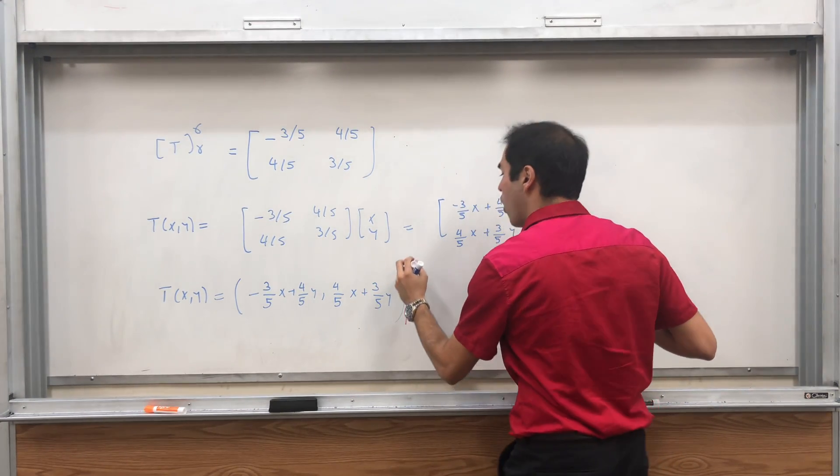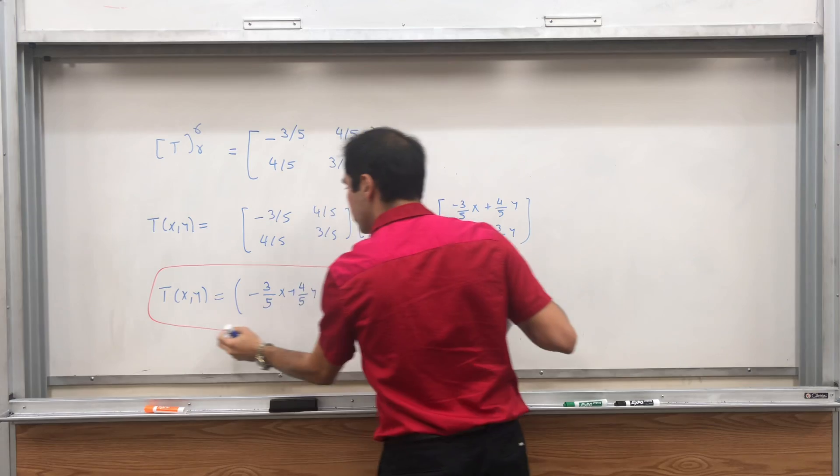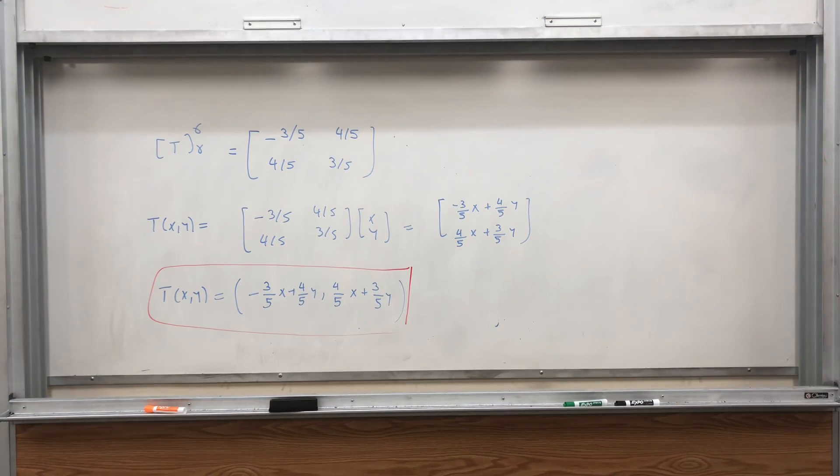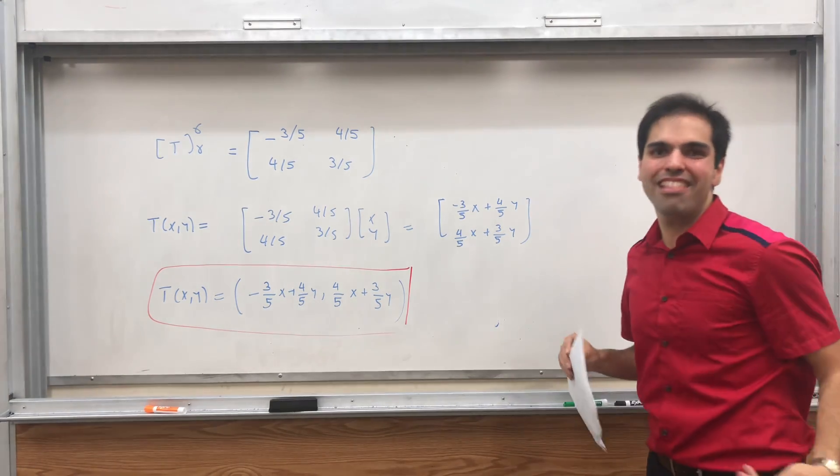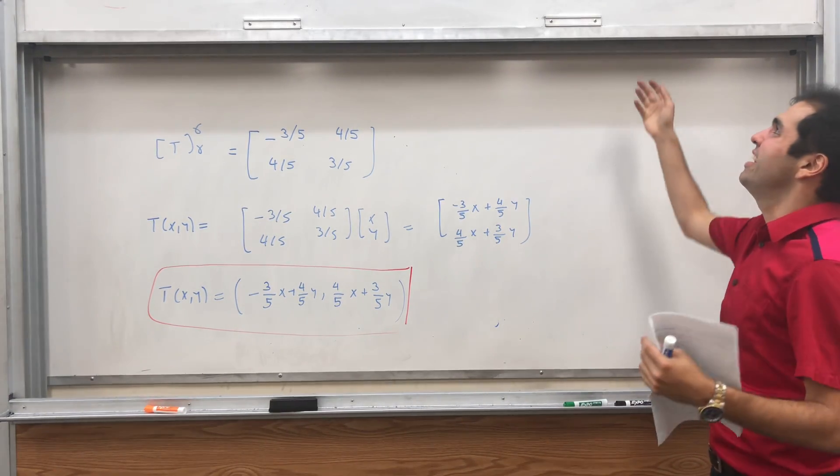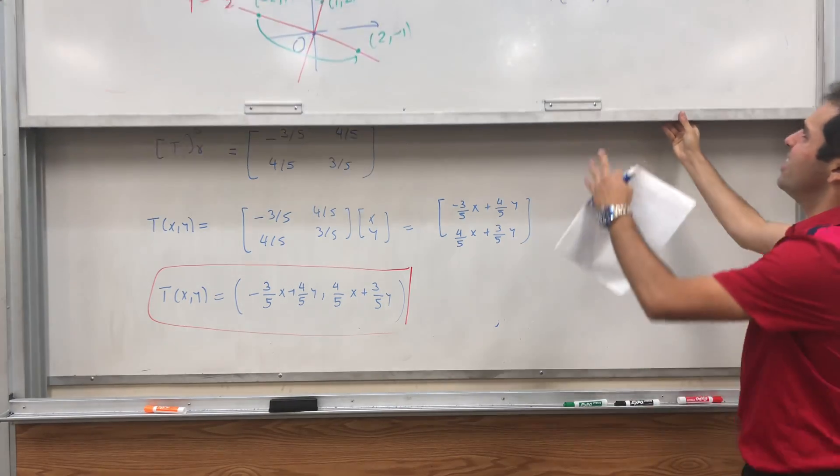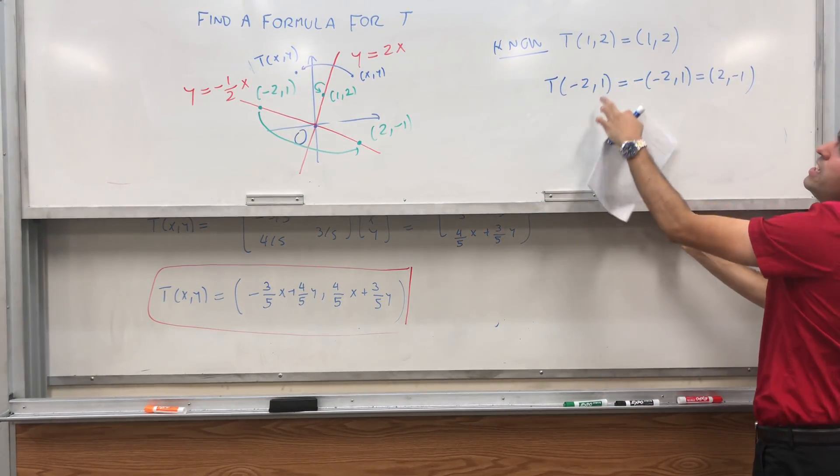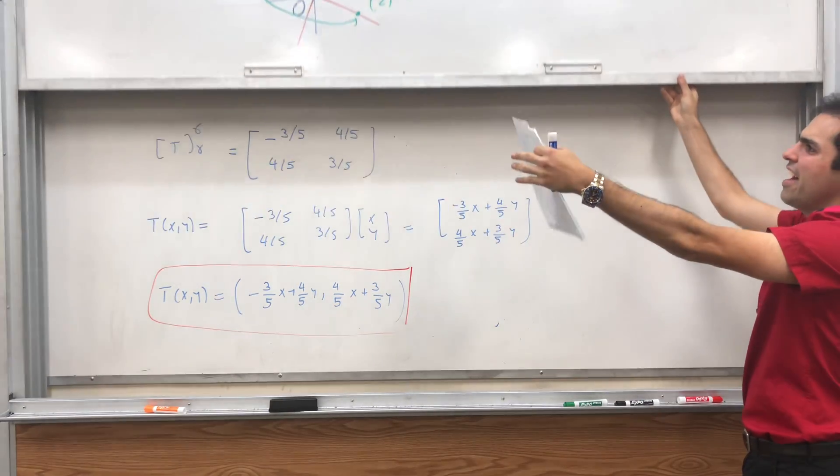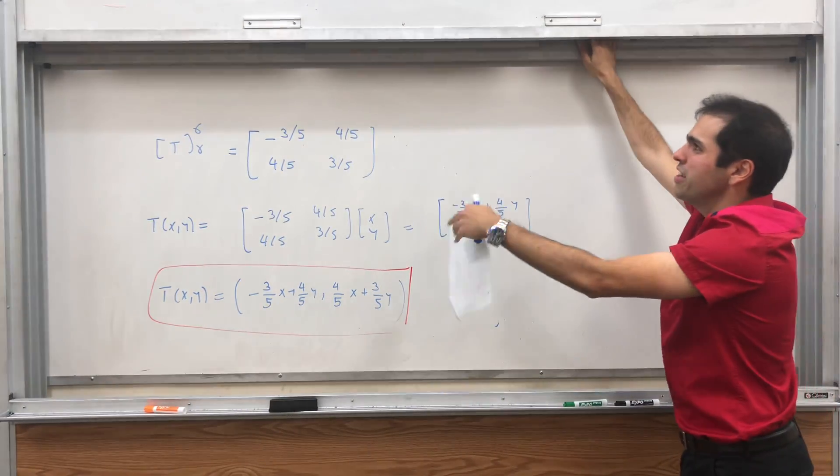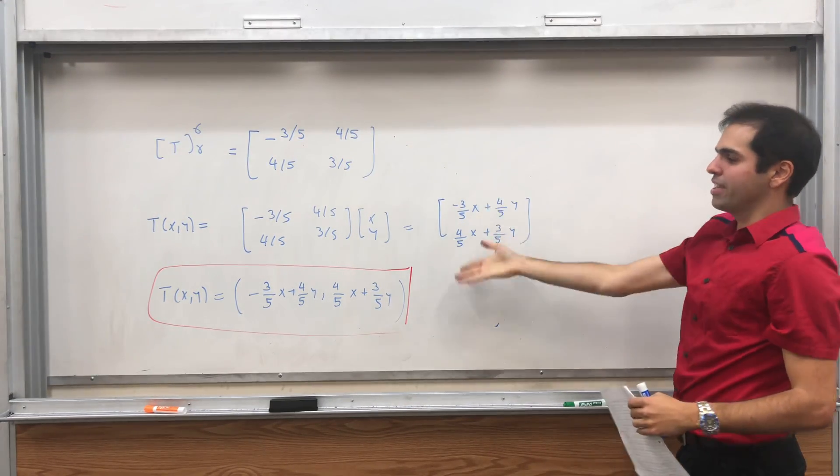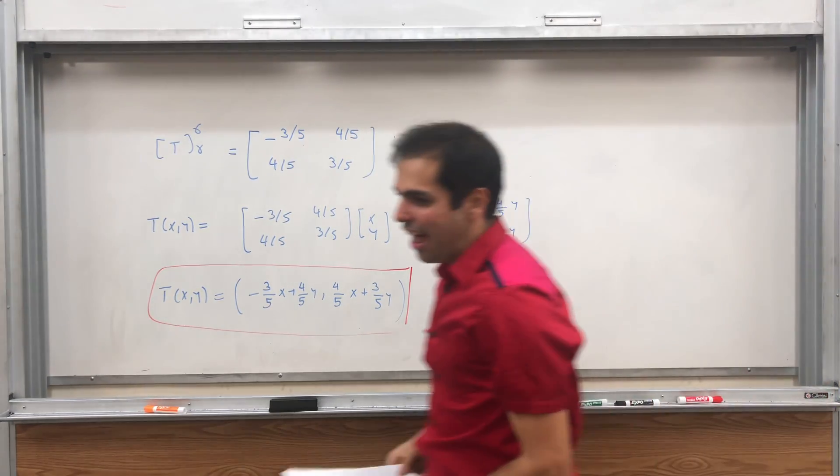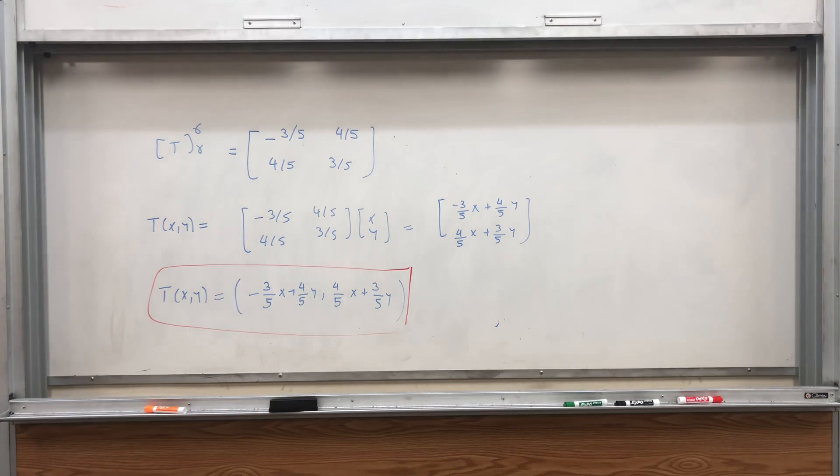And of course, there are other ways of getting this, with geometry or something. But I think this is super elegant. At no point, I mean, I feel linear algebra is a matter of laziness, because at no point did we do any complicated calculation. We just said, well, we know T at those two easy vectors. And then, we just use this beautiful change of coordinates matrix formula. And then we get our beautiful formula. And that's why also sometimes linear algebra is called linear geometry.